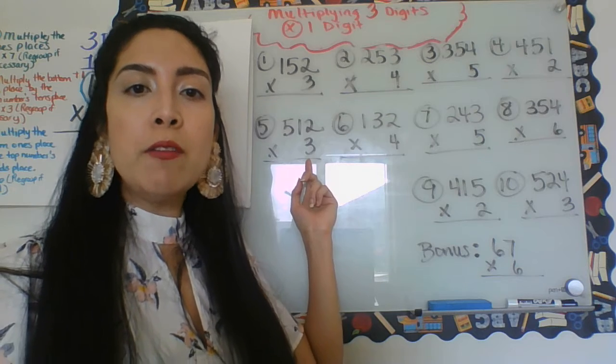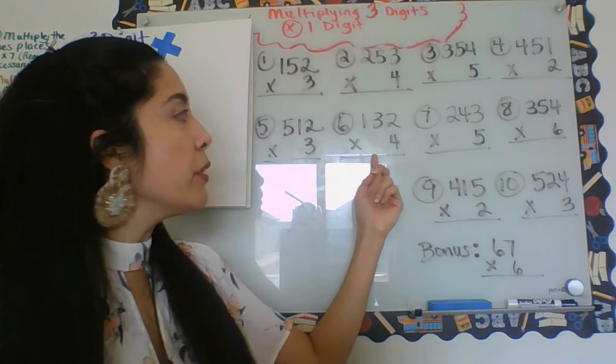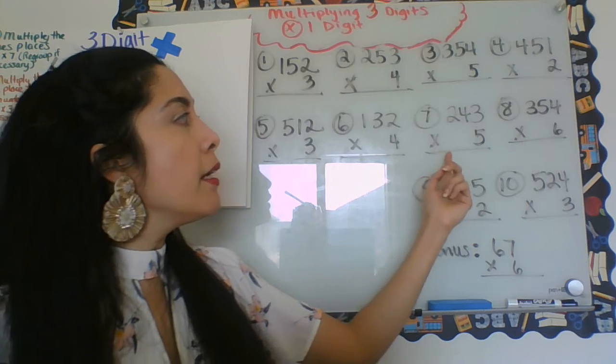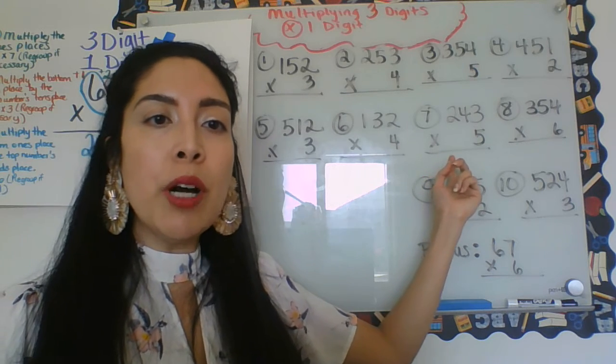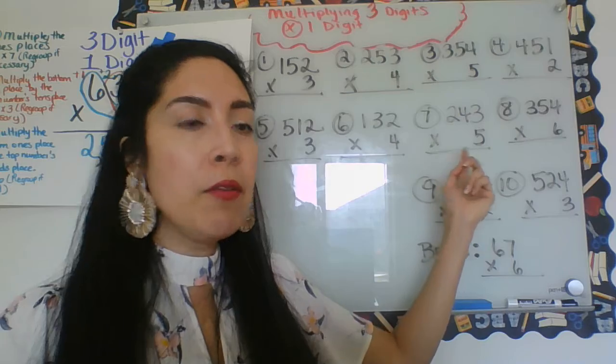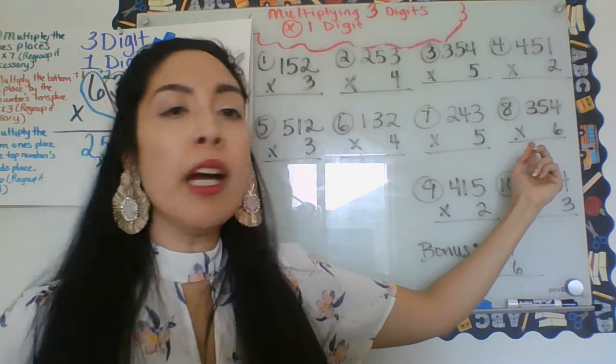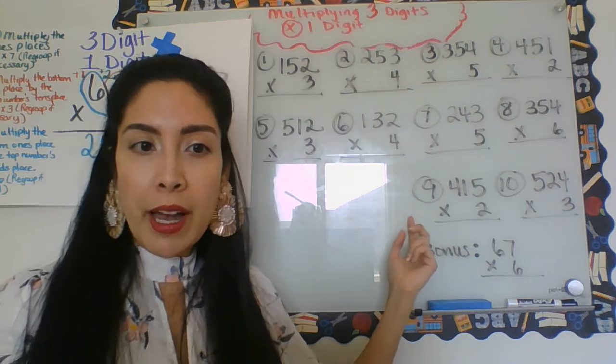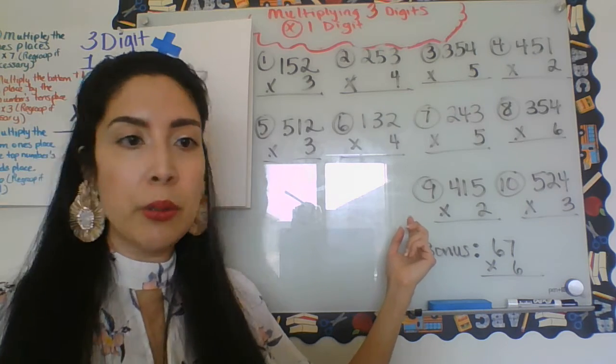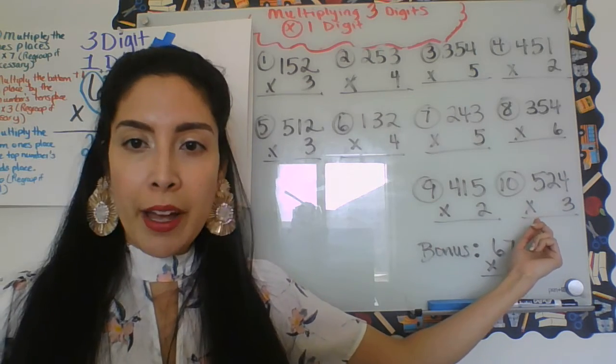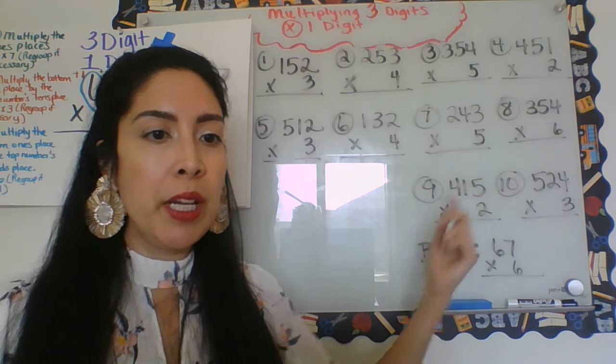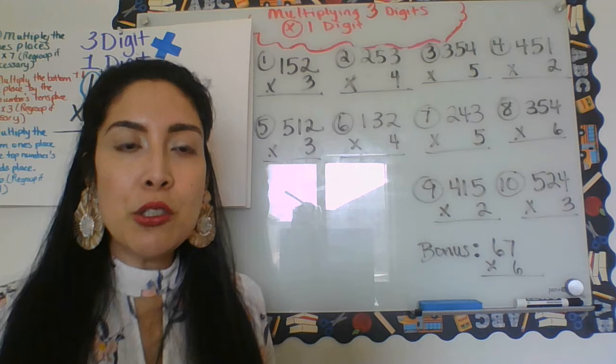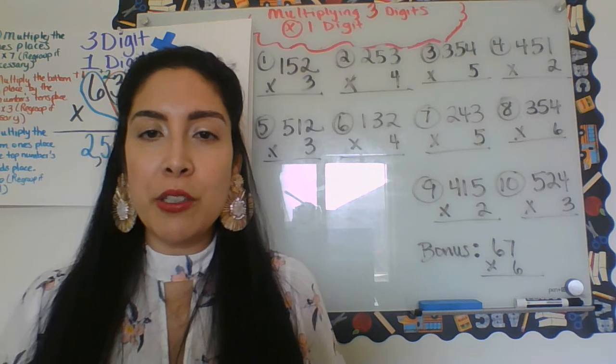Number six: 132 times four. Number seven: 243 times five. Number eight: 354 times six. Number nine: 415 times two. Number ten: 424 times three. Your bonus is 67 times three. Try multiplying those values on your own.